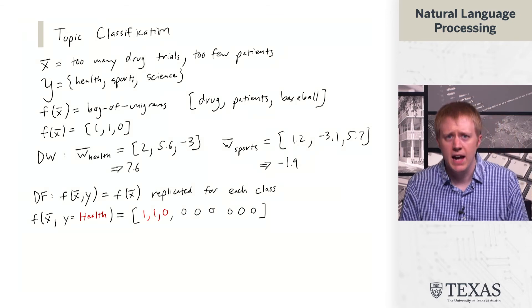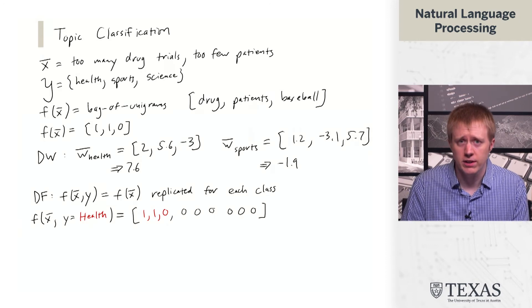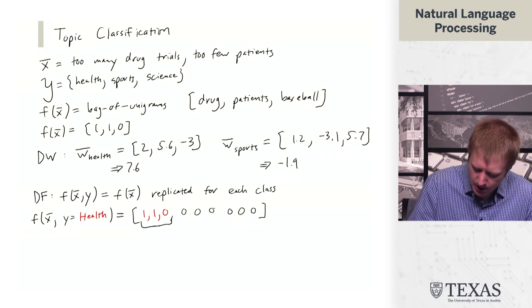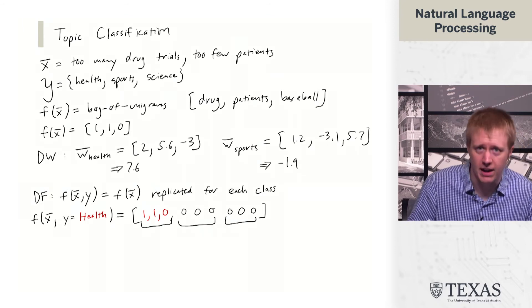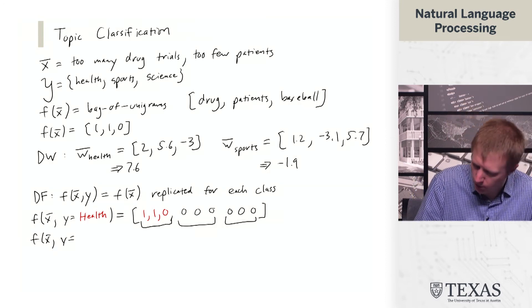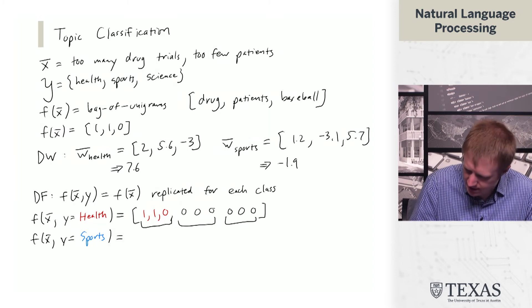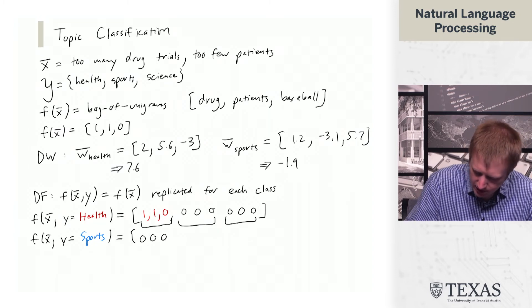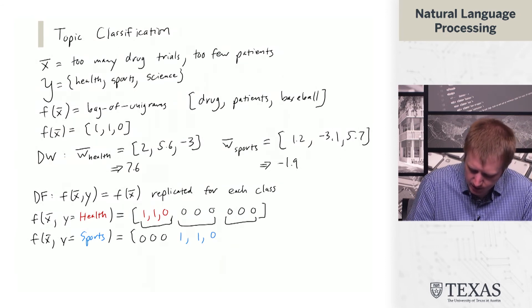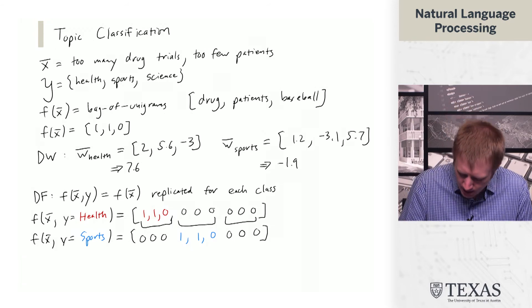What we have here is f(x,y=health) is going to have this (1,1,0) vector in this first position here, and then it's going to have a bunch of zeros after that. When we have f(x) with y=sports, instead we're going to have zeros, and then ones in the second position. The feature vector now occupies the second position here, and then a bunch more zeros.